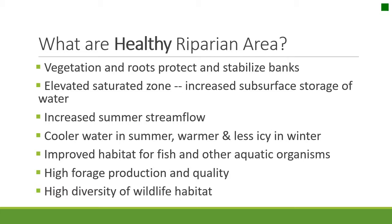Healthy riparian areas also have increased summer stream flow, which helps keep water cooler in summer and also helps keep water warmer and less icy in the winter. This all makes the habitat much improved for not just the fish and aquatic organisms in the water, but also the wildlife that lives on the land.